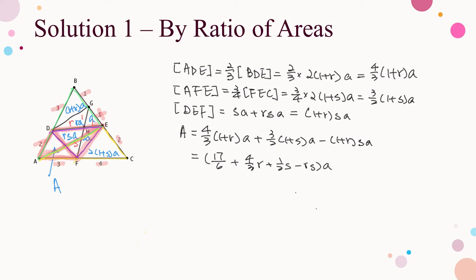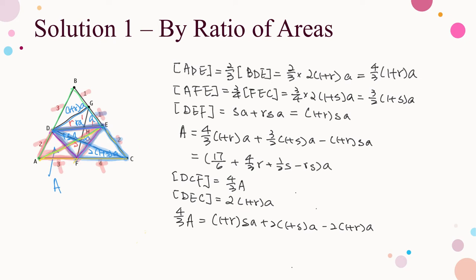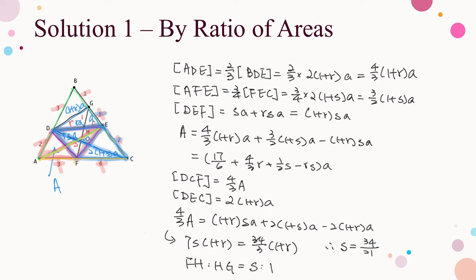By ratio AF to FC equals 3 to 4, area of DCF is (4/3)A-prime. By the ratio GE to EC, which is 1 to 2, area of DEC is 2(1 + R) times A. Since area of DCF equals area of DEF plus area of ECF minus area of DEC, we substitute and simplify to get S equals 34 over 21. As FH to HG is S to 1, we have one of the answers: FH to HG equals 34 to 21.